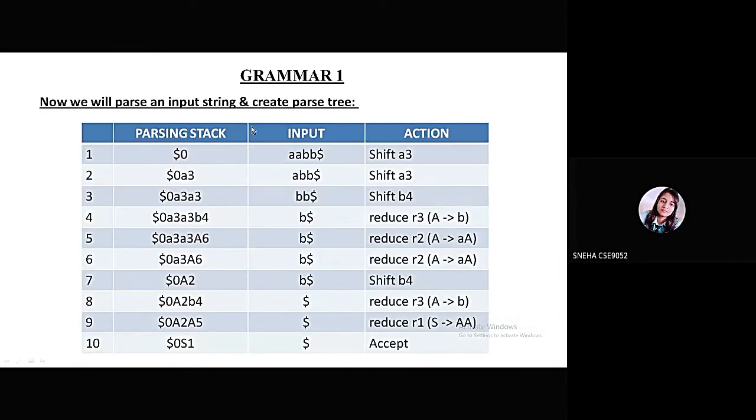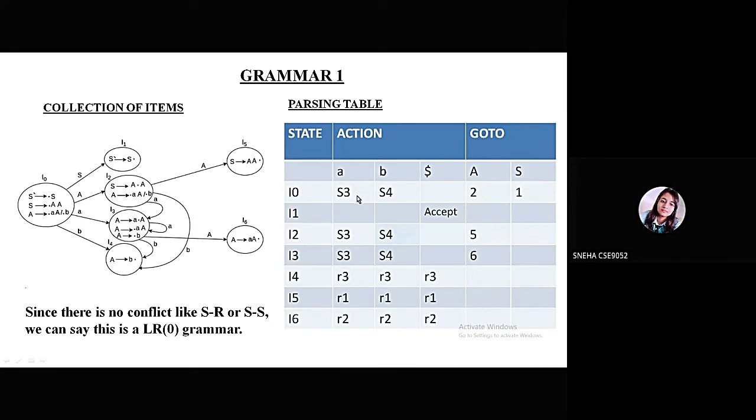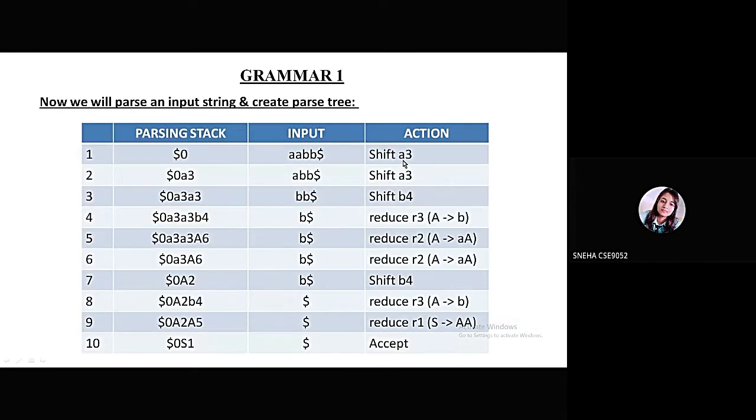Next we will parse an input string and create the parse tree. This is our input, double A double B, and we are trying to parse it into the stack. First, our stack is empty, just $0. Now we have to write the actions for every time we are parsing the input. We have to see the number and compare it with the input, then write accordingly using the table. For 0 and A, it is shift 3, so we are writing shift A3.